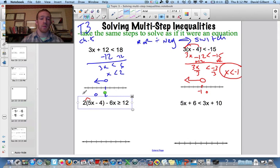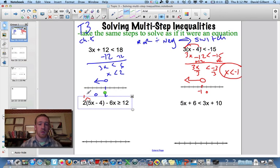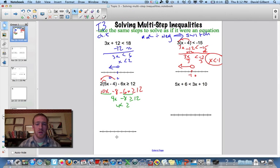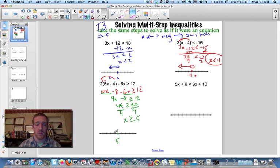So here, we distribute. 10x minus 8 minus 6x is greater than or equal to 12. So here, we have to combine like terms. These are like terms on the same side. They have to be on the same side to be combined like terms. And 10x minus 6x is 4x. Still got the minus 8. It's greater than 12. Add 8 to both sides. It gives me 4x is greater than or equal to 20. Divide both sides by 4. And we get x is greater than or equal to 5. 1, 2, 3, 4, 5. There we go. And I want greater than or equal to.